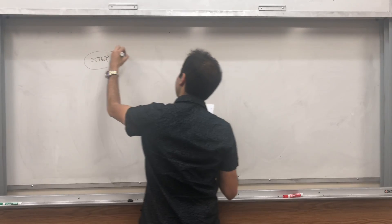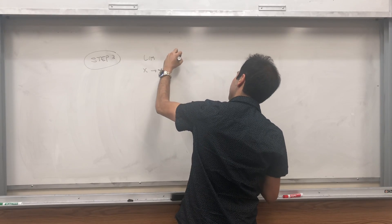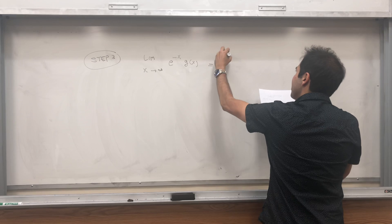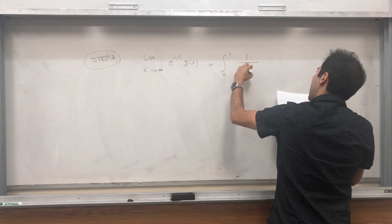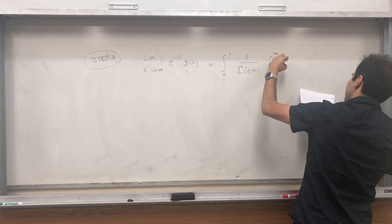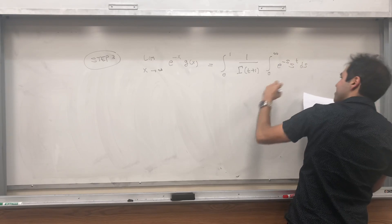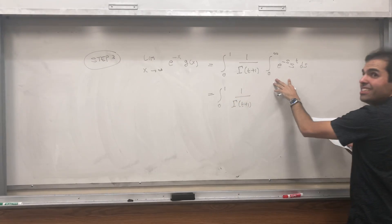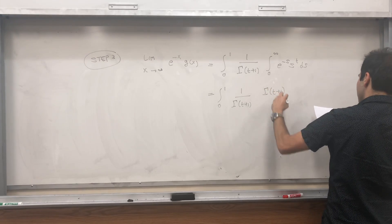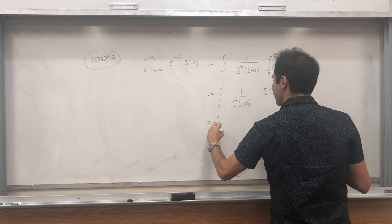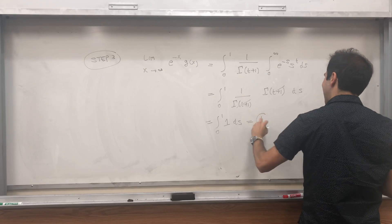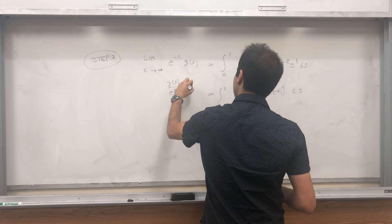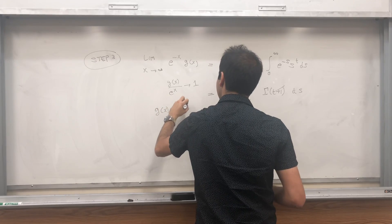And you see, we want to show this is 1, because we want to show g is asymptotic to e to the x. But now we can do this, that's integral from 0 to 1, 1 over gamma of t plus 1, integral from 0 to infinity, e to the minus s, s to the t, ds. But that's just integral from 0 to 1, 1 over gamma of t plus 1. This is precisely the gamma function at t plus 1. This cancels out, and we're left with the integral from 0 to 1 of 1 dt. And we get exactly what we want, that this limit is 1. So in other words, g of x over e to the x goes to 1. So g of x is asymptotically equal to e to the x. Thank you.